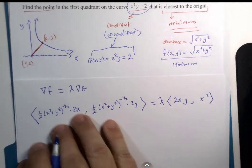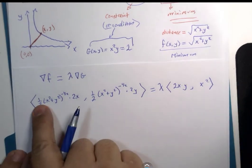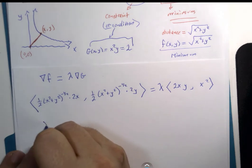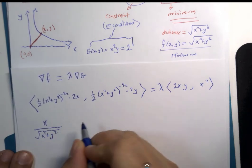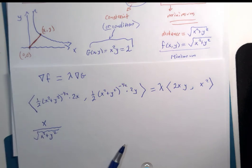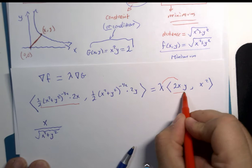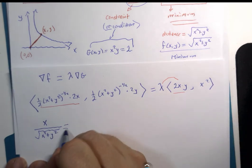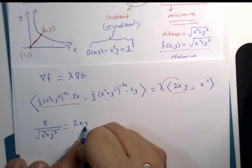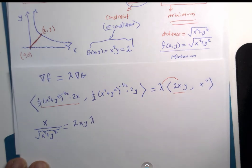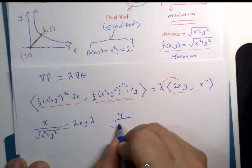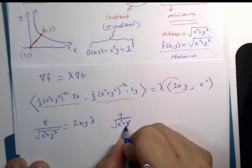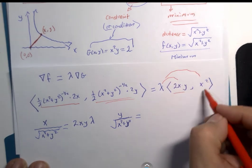Now, it's a little bit big. Let me do some cleanup here. Half of 2 is 1. This is going to become x divided by square root of x squared plus y squared. And this statement here is going to be equal to lambda times this statement here. So, that's 2xy lambda.